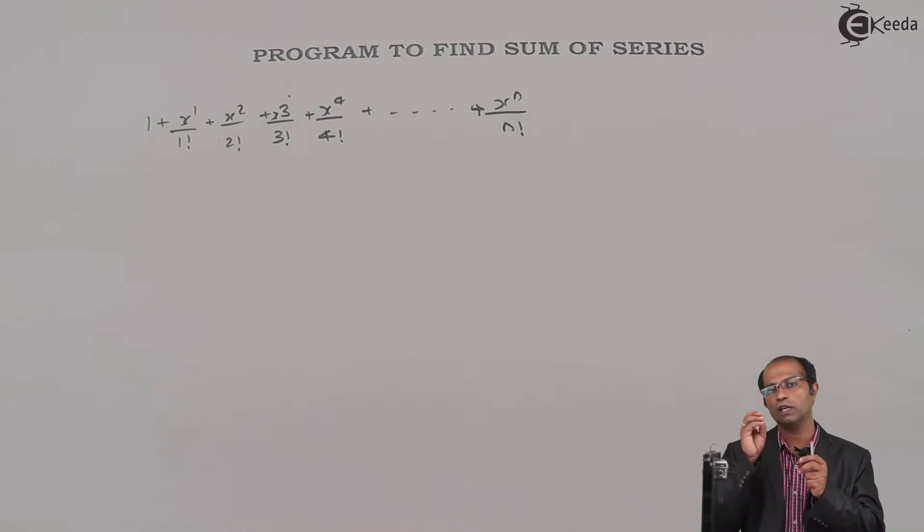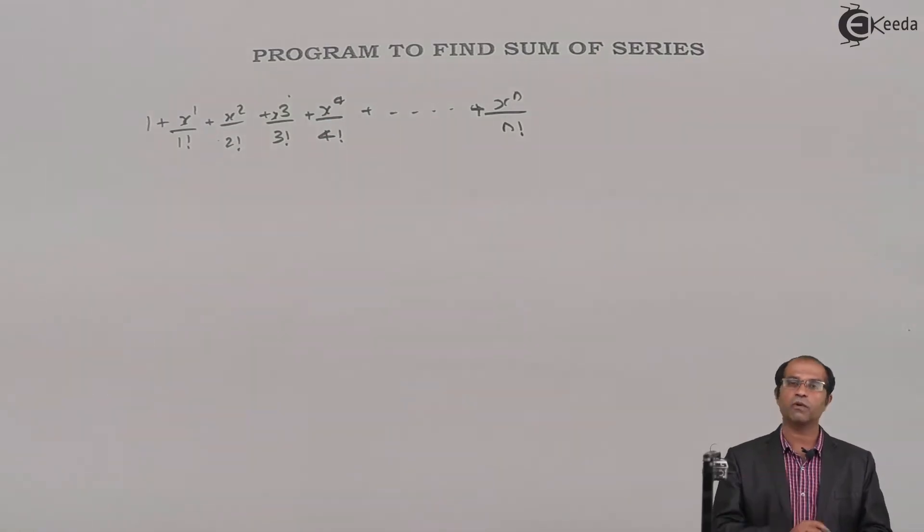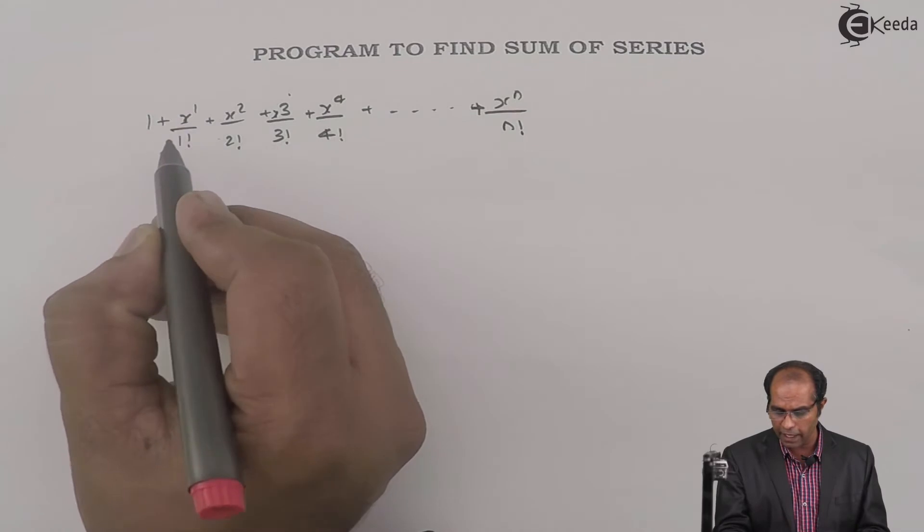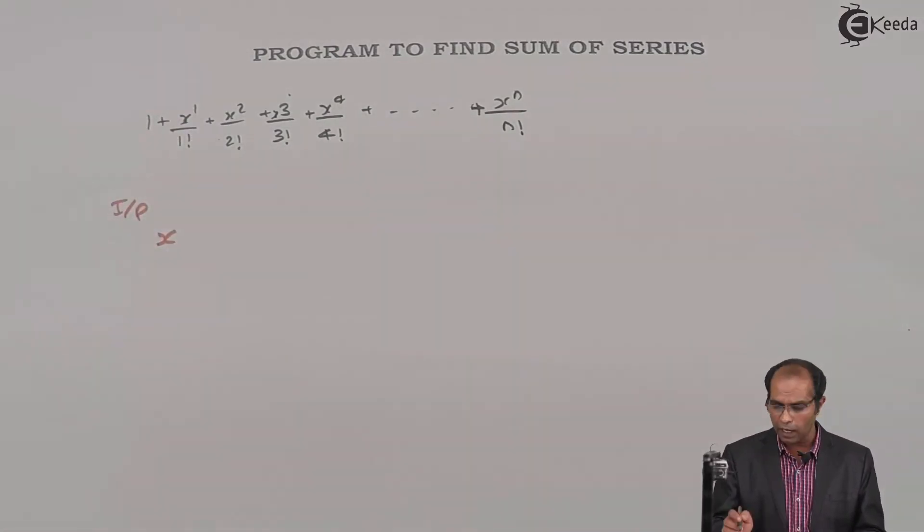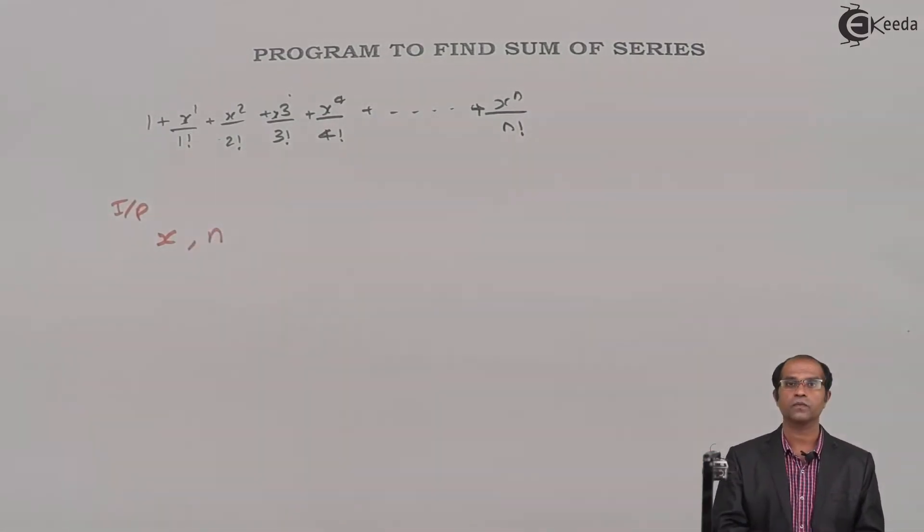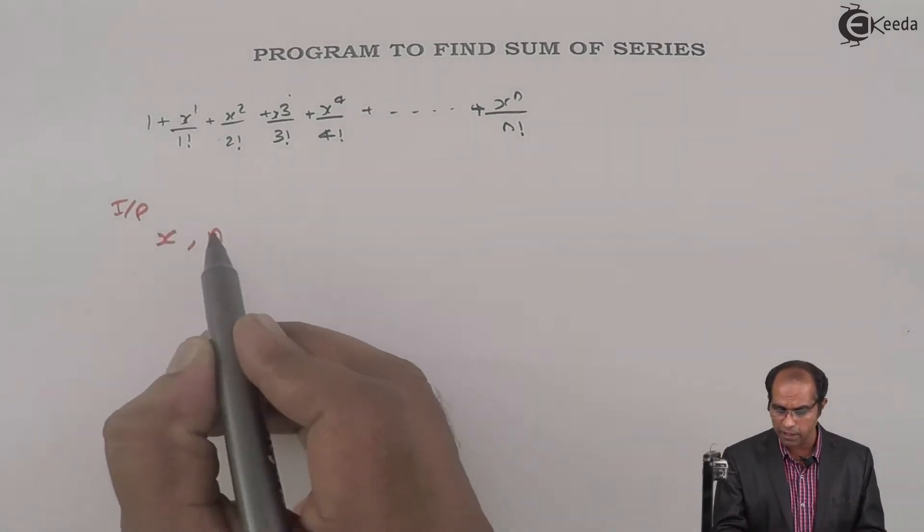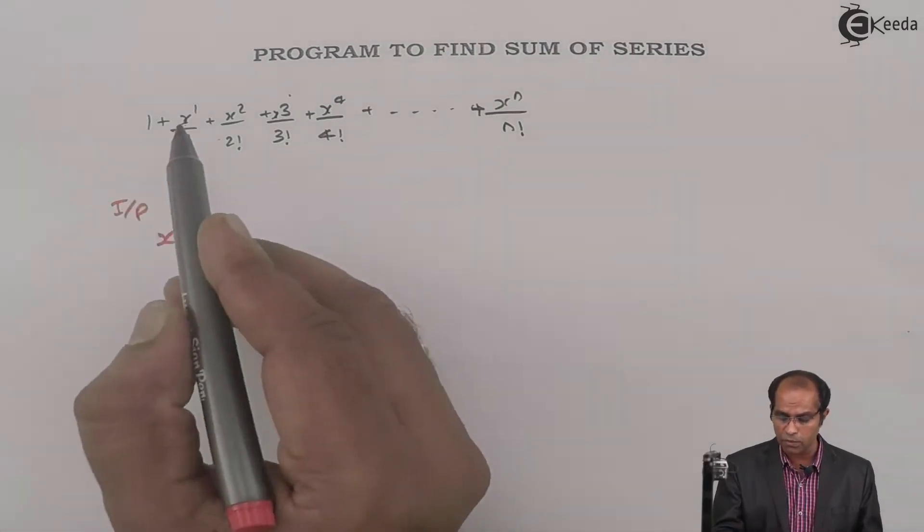Let's first discuss what input is required for this task. The input required is the value of x and the number of terms. For this particular code, the number of terms are n terms, so I need the input as x and n from the user. Once x and n are given, I'm supposed to find x^1, x^2, x^3, x^4, x^5, and so on.